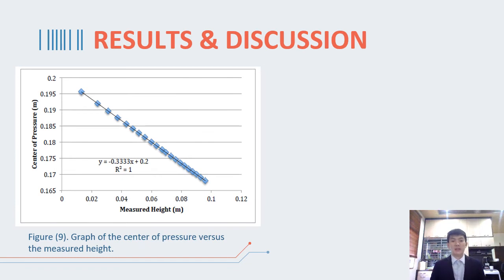The data collected from the hydrostatic pressure system is also able to provide information on the center of pressure on the vertical surface at various heights. From the graph, the center of pressure is decreasing with the increasing of the measured height.